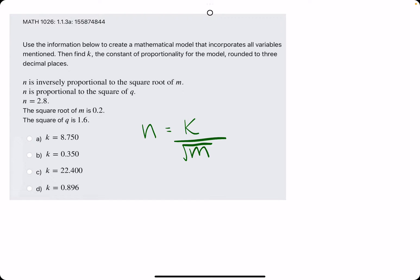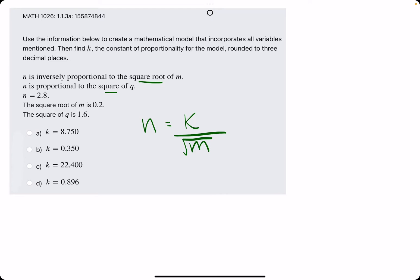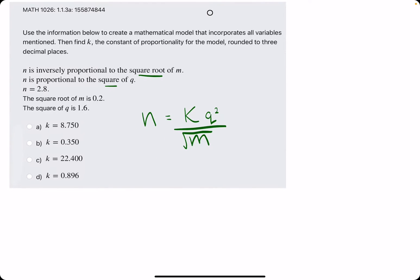then they say it's proportional to the square of q. So mind them saying square root versus square. So if it's the square of q that it's proportional to, that means q squared should go on top.